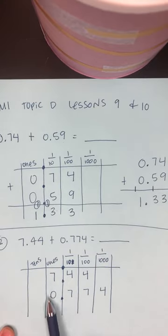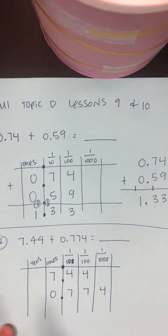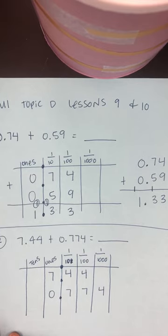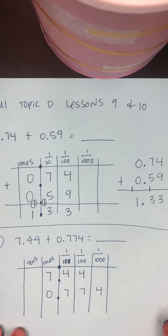So, we do not have the same amount of digits. We don't have the same number of digits. Our second addend has more digits than the first. So, what we're going to need to do is be extra careful. And that's why our place value chart is going to help us make sure we are adding our like units.